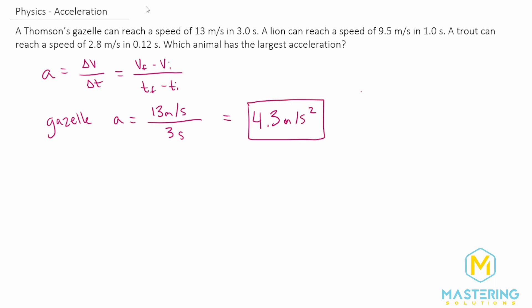Now let's do the same thing with the lion. The acceleration is 9.5 meters per second divided by 1 second, which gives us 9.5 meters per second squared.